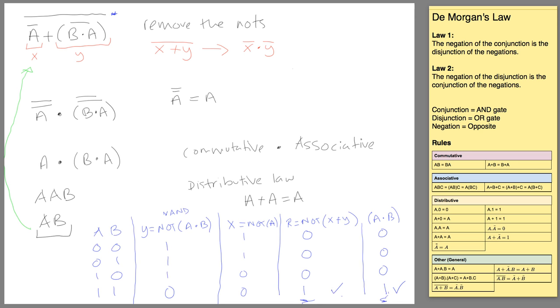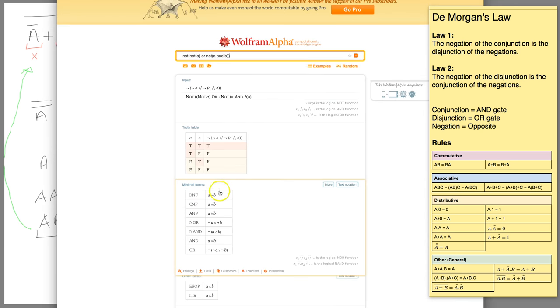So our simplification of this expression checks out because we have exactly the same truth table, we have the same results under both columns. Okay, so let's look at another tool that you could use to help you with this. I'm going to boot up my Chrome here. I've got Wolfram Alpha open, I've typed in the expression here.